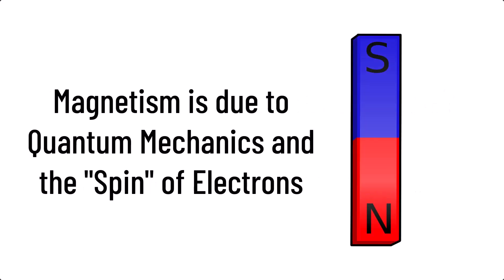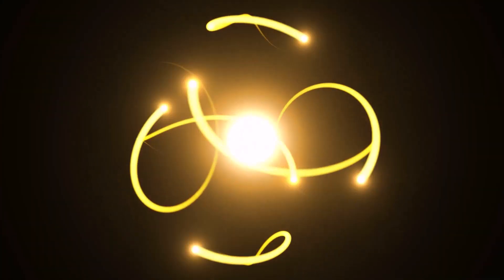Magnetism, in essence, is a quantum mechanical phenomenon. However, I will try and explain it simply. Magnetism has its origin from the spin of electrons within atoms.